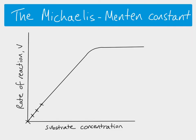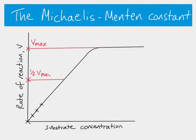Now this maximum rate of reaction here is known as Vmax — maximum velocity, maximum rate. Vmax is going to be different for different enzymes. It can also be different depending on things like temperature. So for any one enzyme at any one particular temperature with its substrate, if you were to then look at half of the rate of reaction, which we call half Vmax...